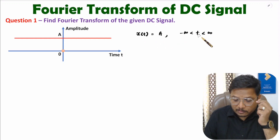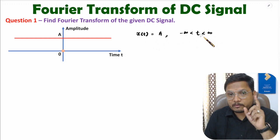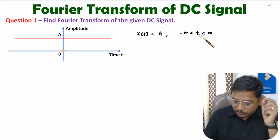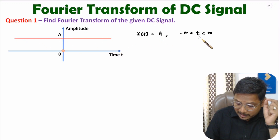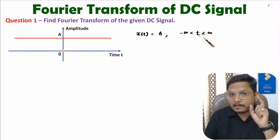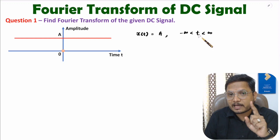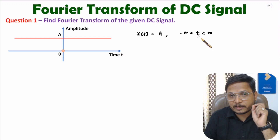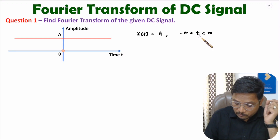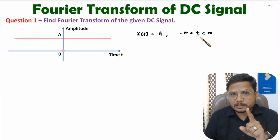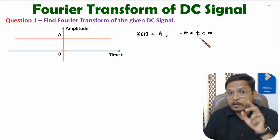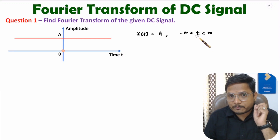Now for this signal, we need to understand Fourier transform. Here we have a signal that is constant throughout the time, and throughout the time means the range of time is there from minus infinity to plus infinity. So for this Fourier transform, first of all you need to understand Dirichlet's condition for existence of Fourier transform.